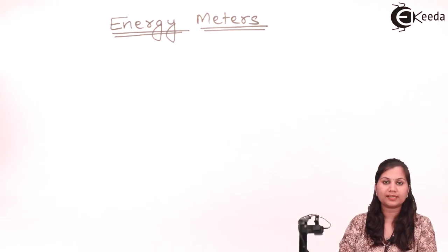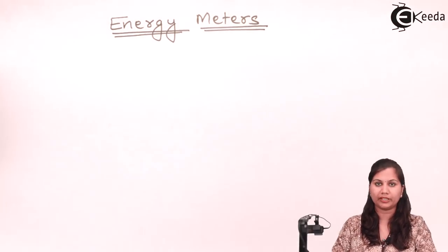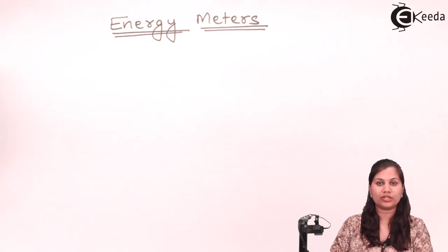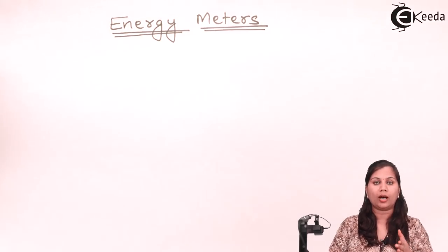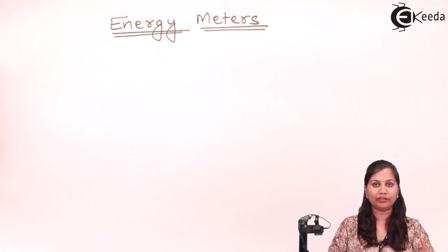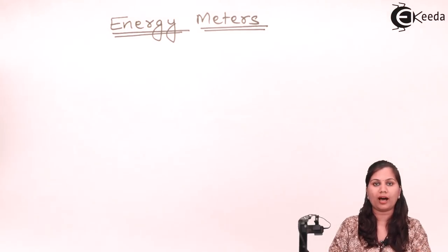Energy meters are used for the measurement of energy. Energy is measured by measuring the power over a period of time. The unit for power is watt, and over time we are measuring — so the unit is watt-hour. Energy meters are also known as watt-hour meters.